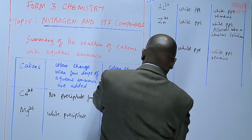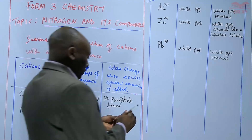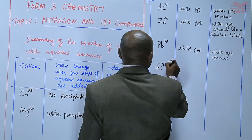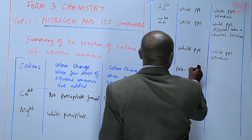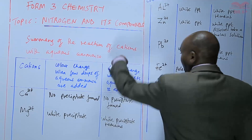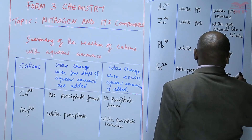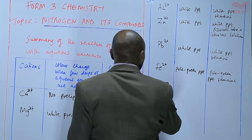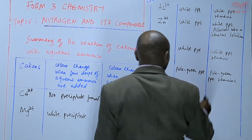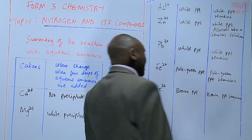We want to make our table slightly longer. Lead(II) ions are included. Then iron(II) ions — we saw that they form a pale green precipitate with a few drops of aqueous ammonia, and when you add excess ammonia, the pale green precipitate remains. Then iron(III) ions — these form a brown precipitate, and the brown precipitate remains even when you add excess ammonia.